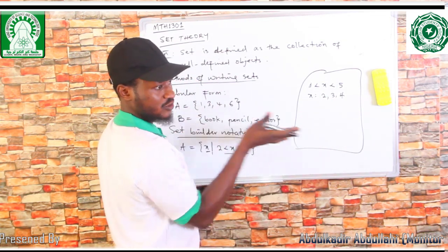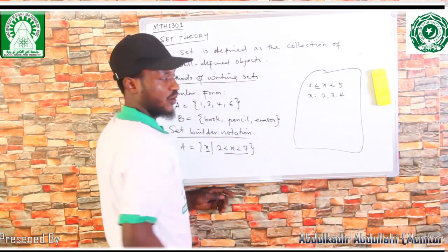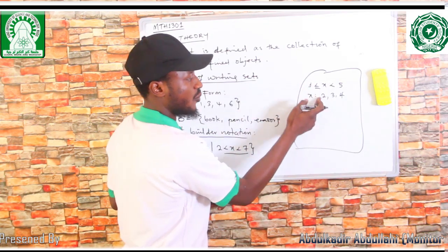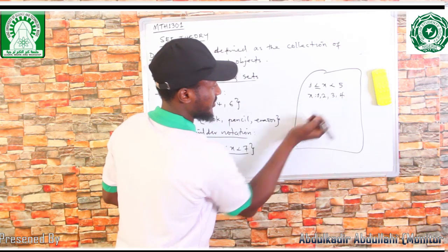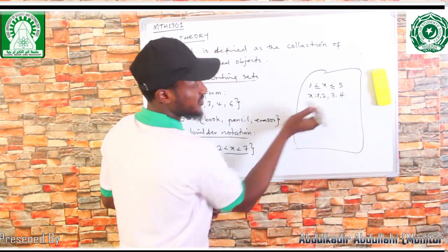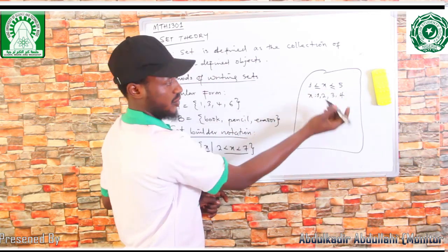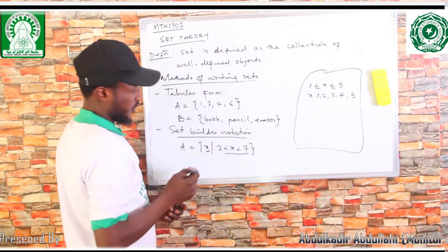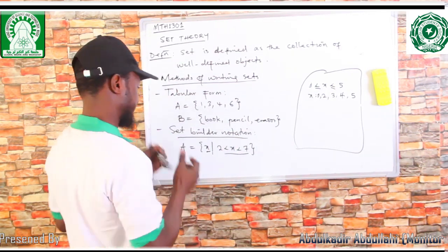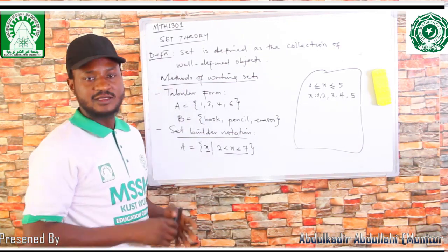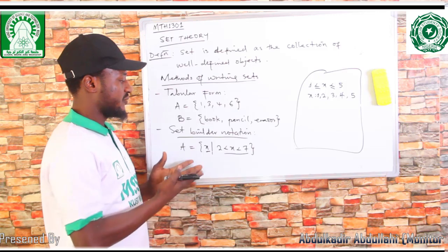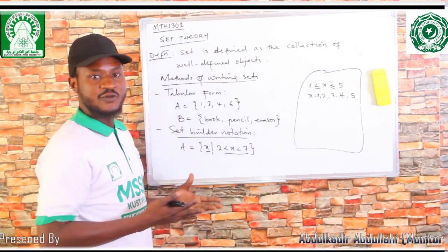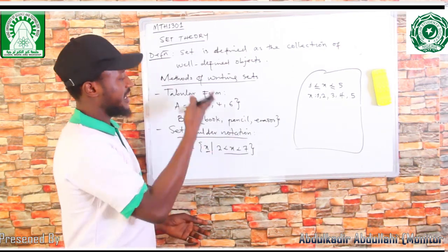But when we introduce inclusive, we use less than or equal to. If I put less than or equal to on the left, then 1 is inside — I'll start counting from 1. And if I put less than or equal to on the right, then 5 is also inclusive — I put 5 as well. That is the concept of interval. So these are the two methods of writing sets: the first one is tabular form, while the second one is set builder notation.